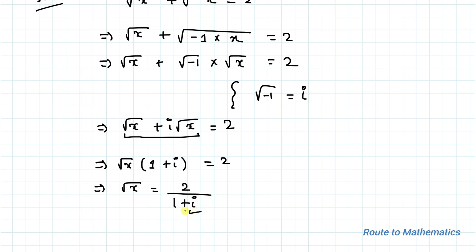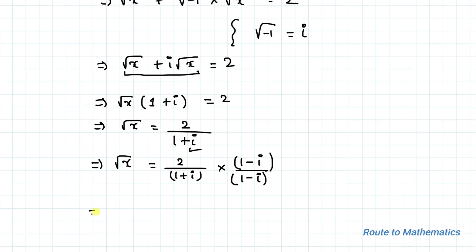By cross multiplication I can write root x equals 2 divided by (1 plus iota). Here we have iota in the denominator. In order to remove or eliminate iota from the denominator, I'll multiply by its conjugate in both numerator and denominator. So root x equals 2 over (1 plus iota) multiplied with (1 minus iota) over (1 minus iota).